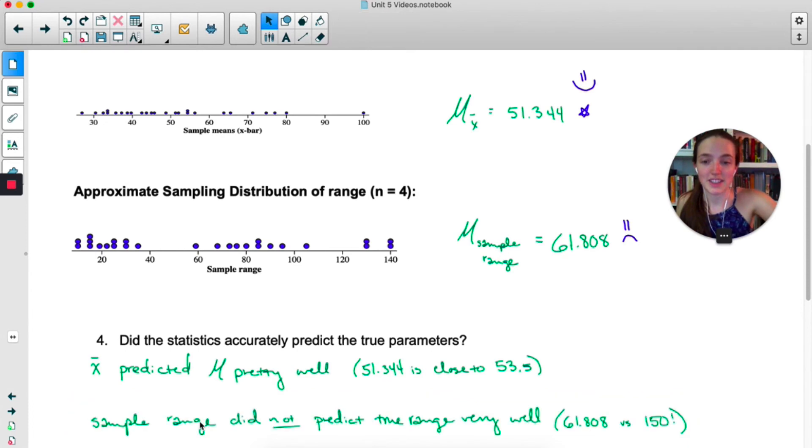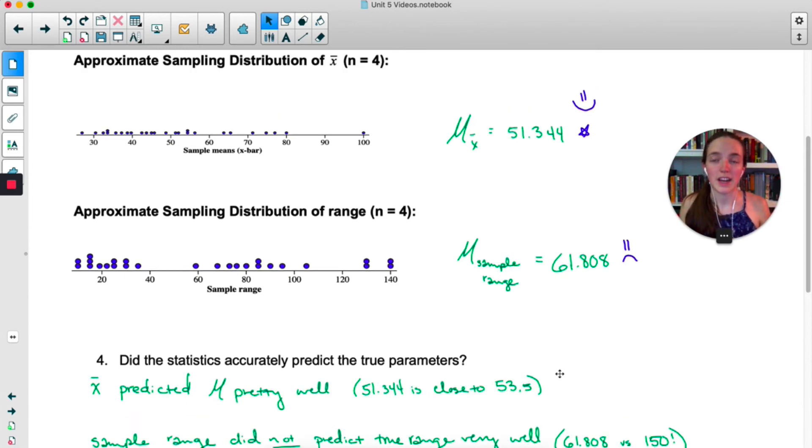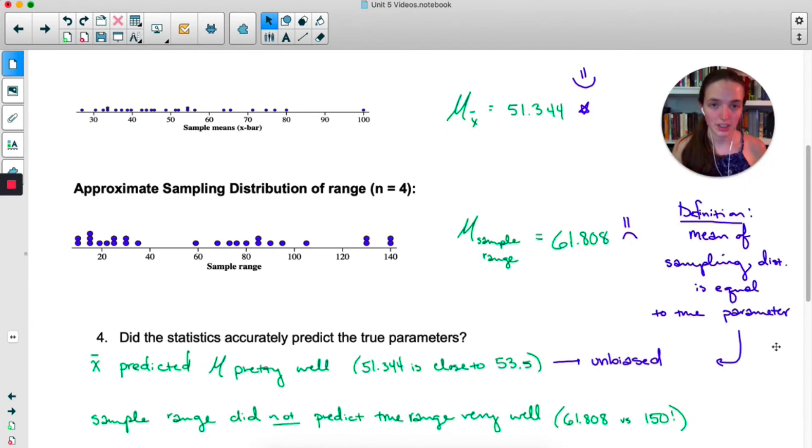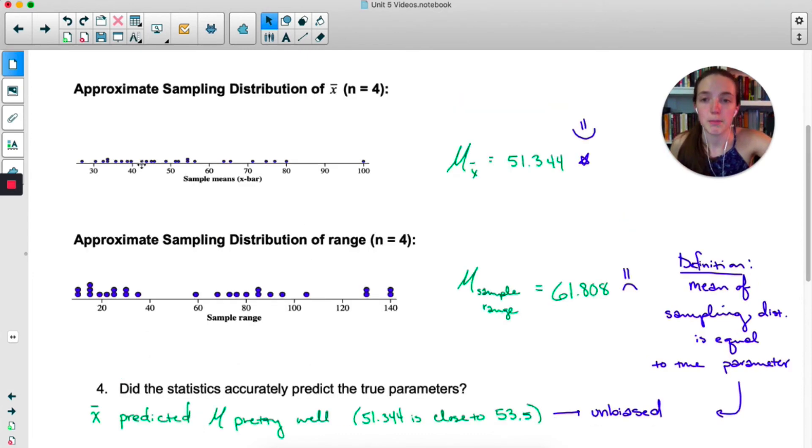When we're asked if these statistics accurately predicted the true parameters, I would say x-bar predicted mu pretty well. 51 is very nearly 53. That's not bad. However, I would say the sample range did not predict the true range very well. And if you think about it, that makes sense. In a sample of size 4, one outlier is going to drag x-bar towards the outlier, but it's going to really mess up the range. Because x-bar predicted mu so well, we call it an unbiased estimator. The definition of an unbiased estimator is the mean of the sampling distribution of that estimator is equal to the true parameter. And that's what we saw here. The mean of this approximate sampling distribution was very close to the true mean of the population.